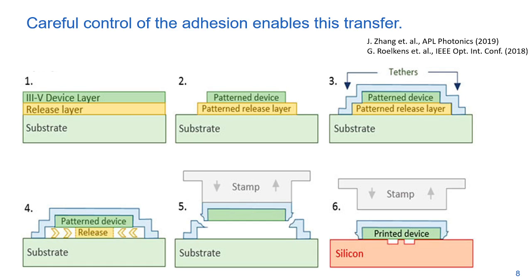Careful control of adhesion enables this transfer. The source wafer is prepared by patterning the structure and thin tethers. These tethers are strong enough to keep everything in place but weak enough to break easily. The coupons are released by removing the layer underneath using wet etching. The stamp is made of an elastomer with variable adhesive strength based on movement speed. The coupon can be picked up by quickly moving the stamp, which breaks the tethers.